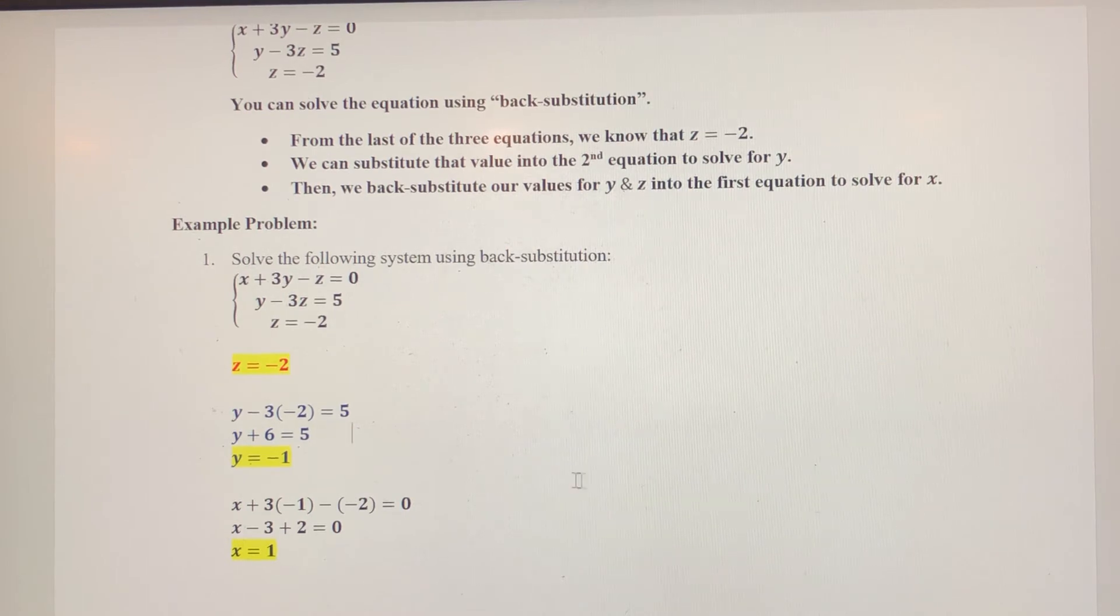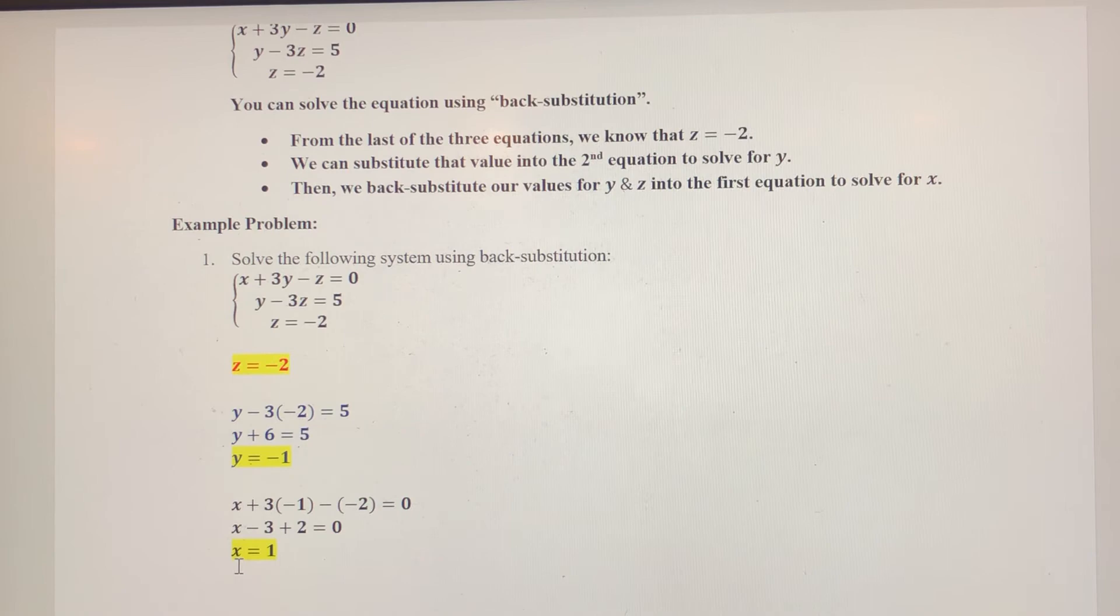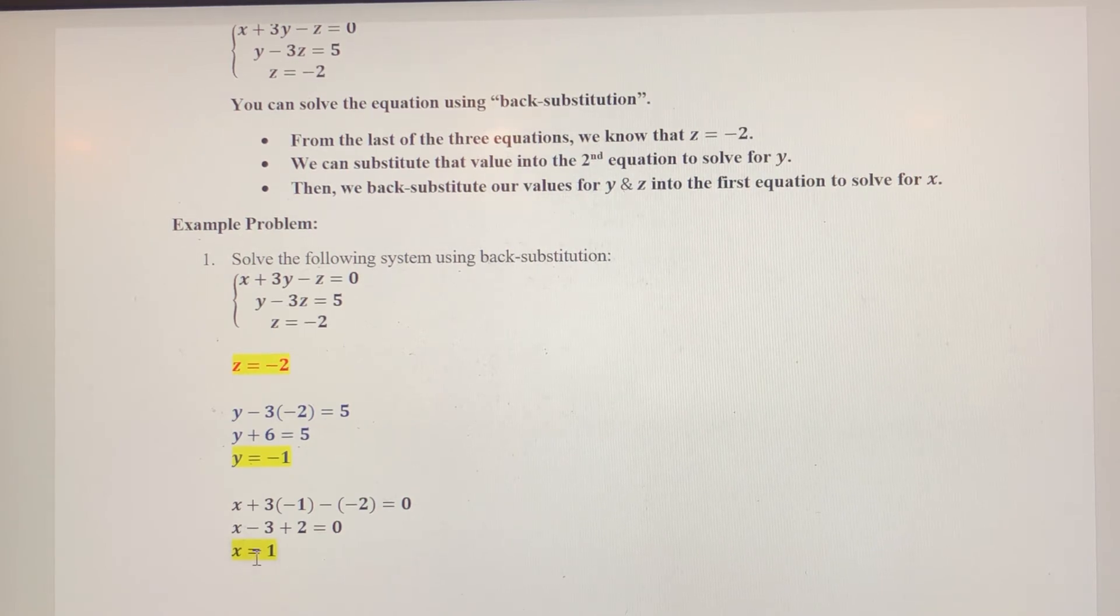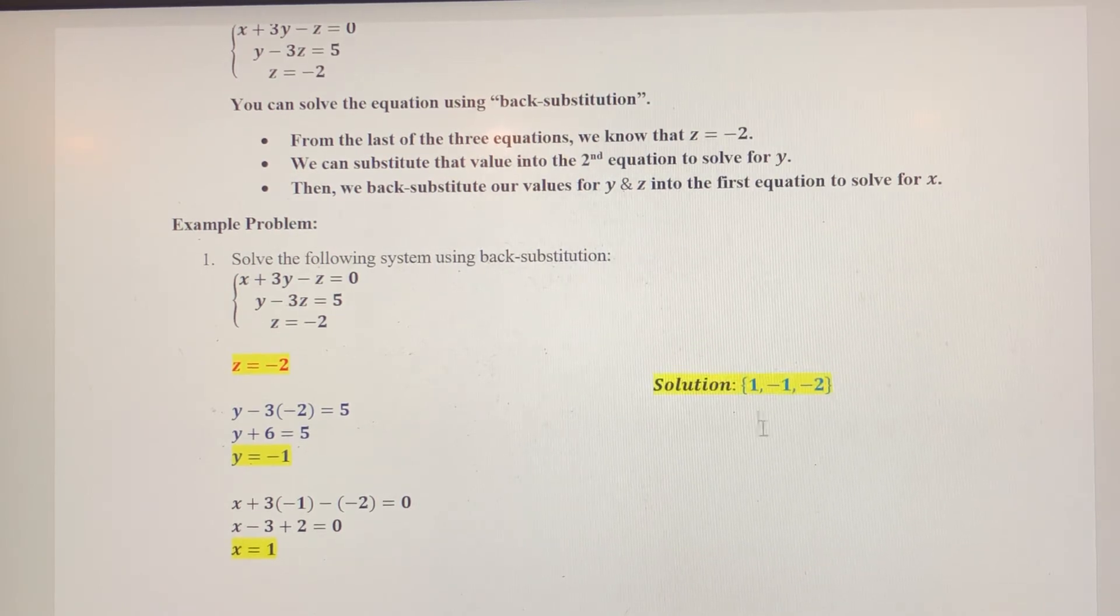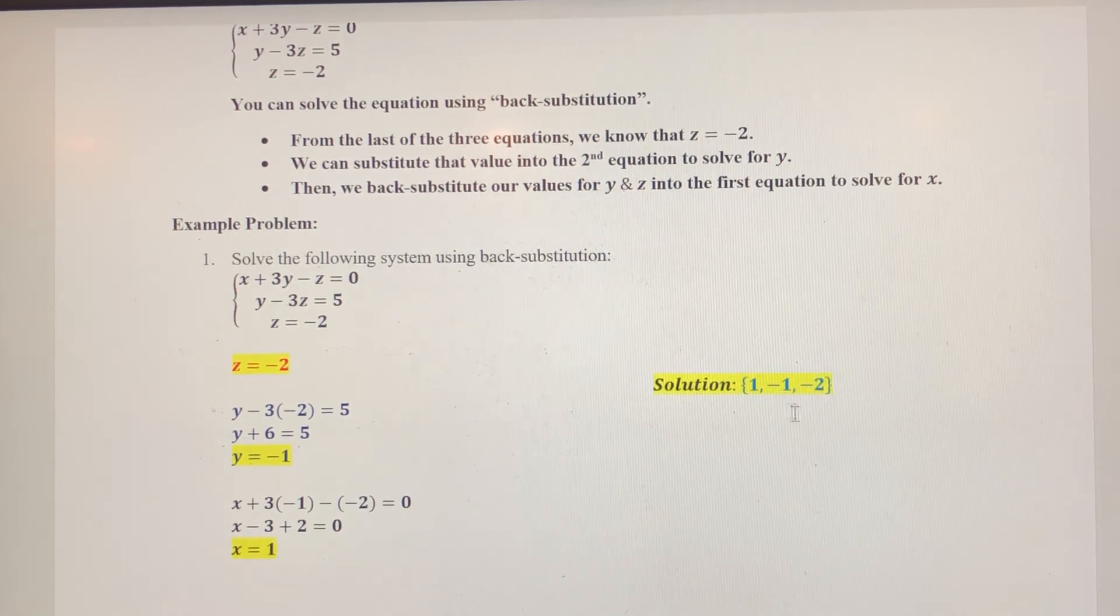Now, how do I write my solution? I'm going to put these, it's not just an ordered pair, it's kind of like an ordered trio here, and we want to go in alphabetical order, X, Y, and Z. So, my solution then is going to be X is one, Y is negative one, and Z is negative two.